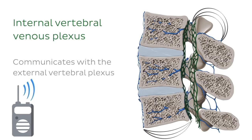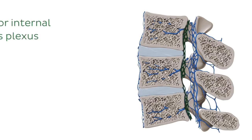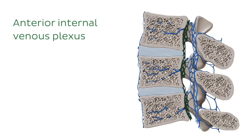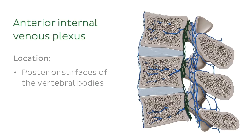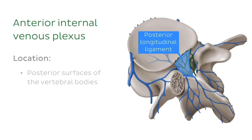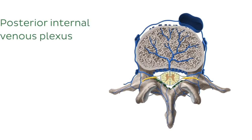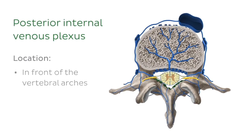Radicular veins and the basivertebral veins join the internal vertebral venous plexuses and drain the vertebral column. The anterior internal venous plexus, highlighted in green, lies on the posterior surfaces of the vertebral bodies within the vertebral foramen, behind the posterior longitudinal ligament that holds the vertebrae. The posterior internal vertebral venous plexus is found on either side of the midline in front of the vertebral arches, and anastomoses with the posterior external plexus. The anterior and posterior internal venous plexuses communicate with each other through a complex network of venous branches.